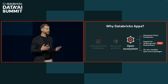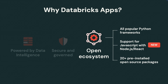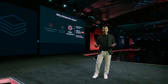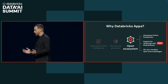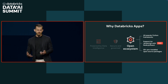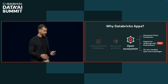Open ecosystem: this is something Databricks talks about a lot. We believe in openness, open source, and open frameworks, and we took that same philosophy with Databricks apps. We supported out-of-the-gate all the popular Python frameworks — Streamlit, Gradio, Dash, Shiny, FastAPI, Flask. Whatever you wanted to build in, we support that. And as of today, we're announcing support for JavaScript as well through Node and React. Now you can choose your own framework, your own language, build the app wherever you want and deploy it as a Databricks app. We also support 20-plus pre-installed open source packages, so you have everything you need to build the best data intelligence app already deployed.